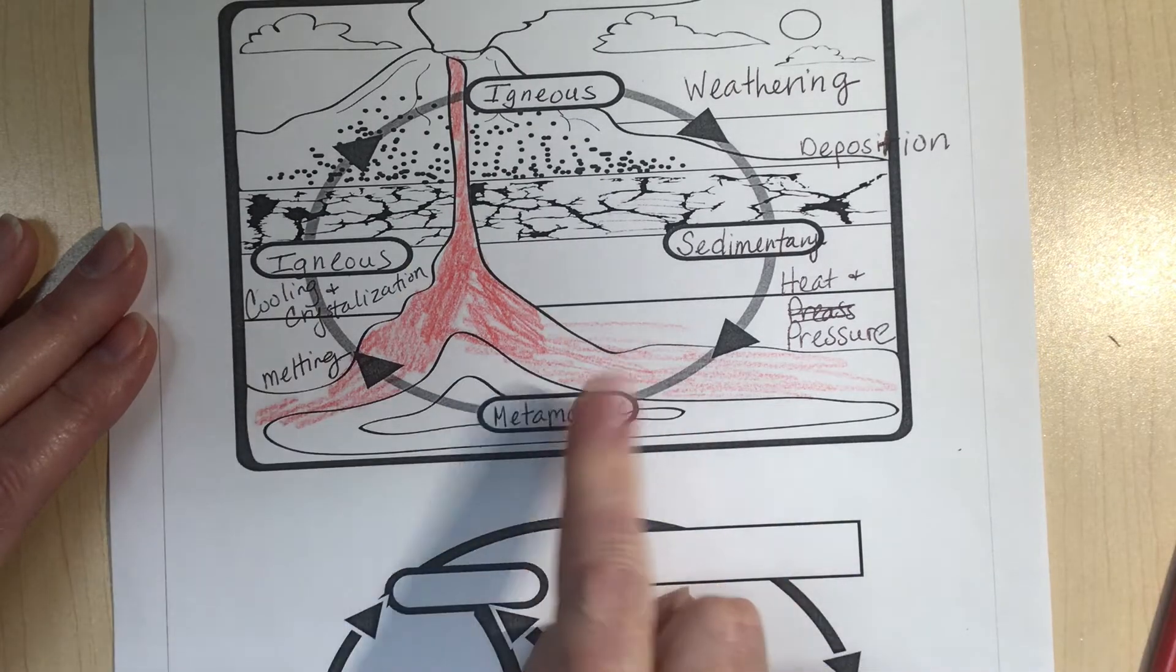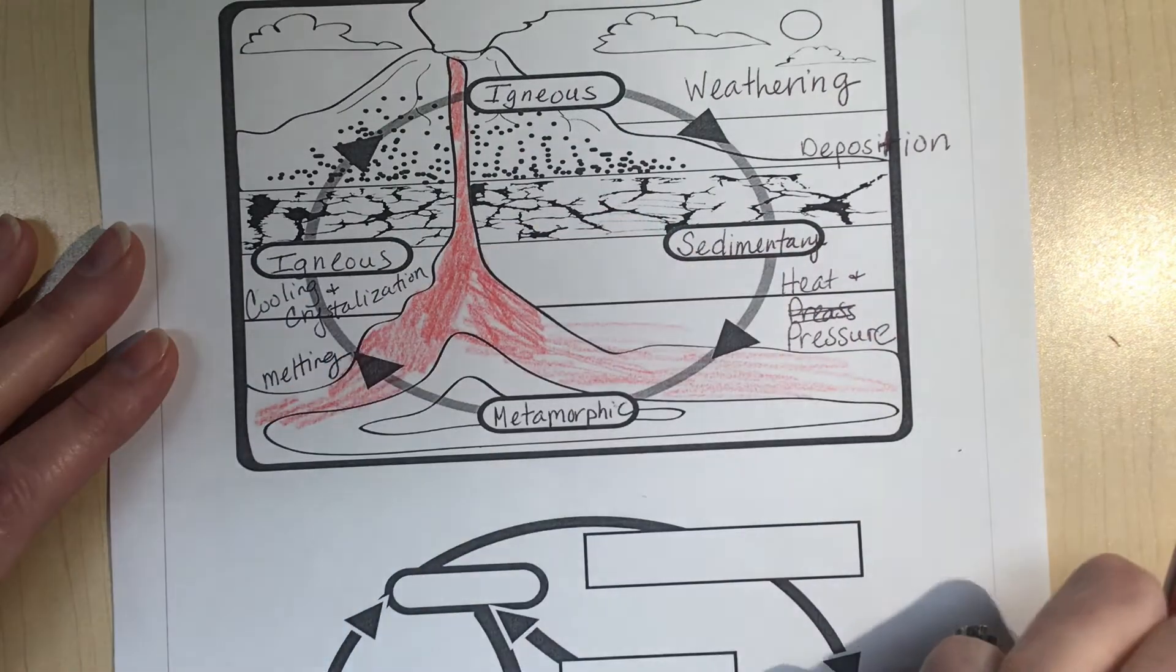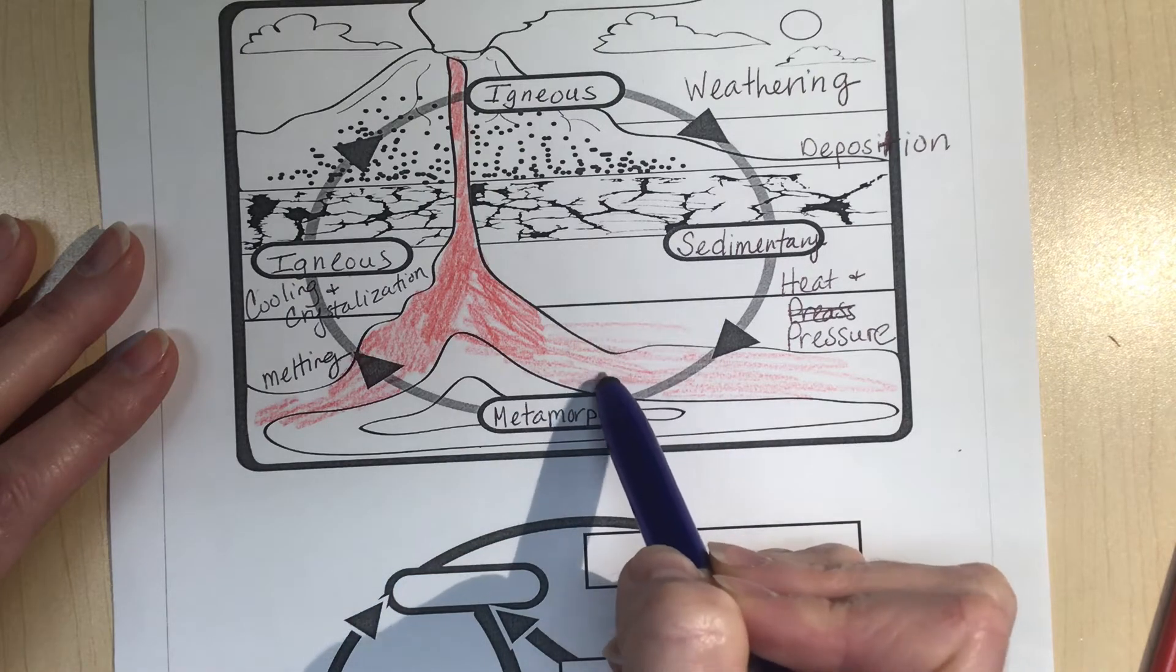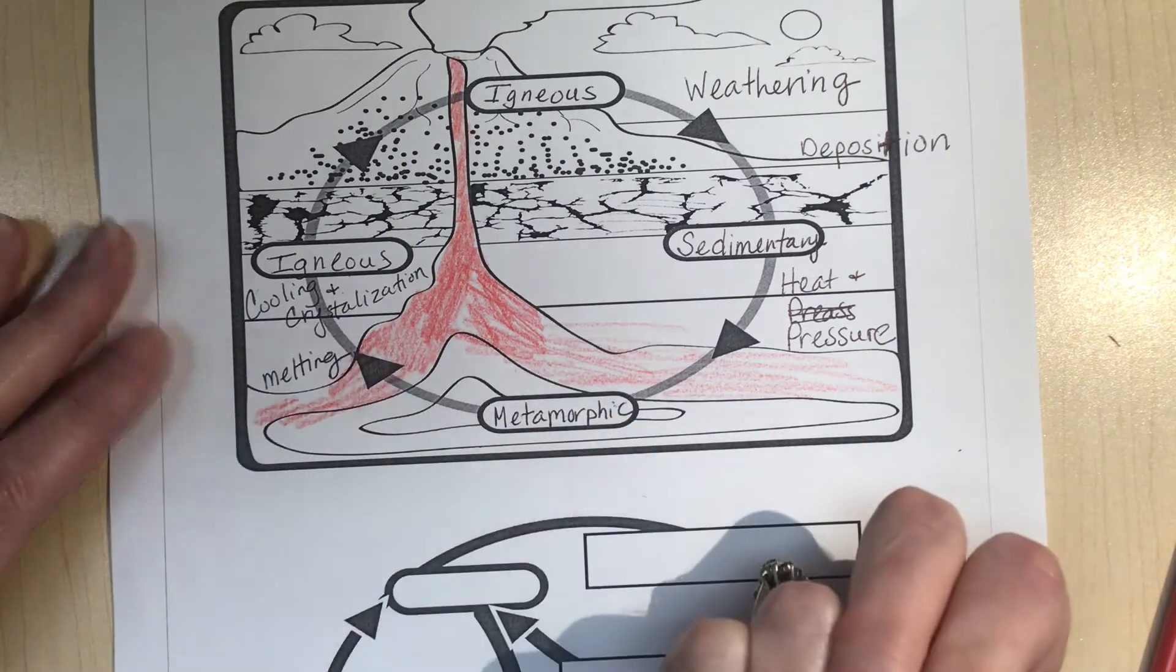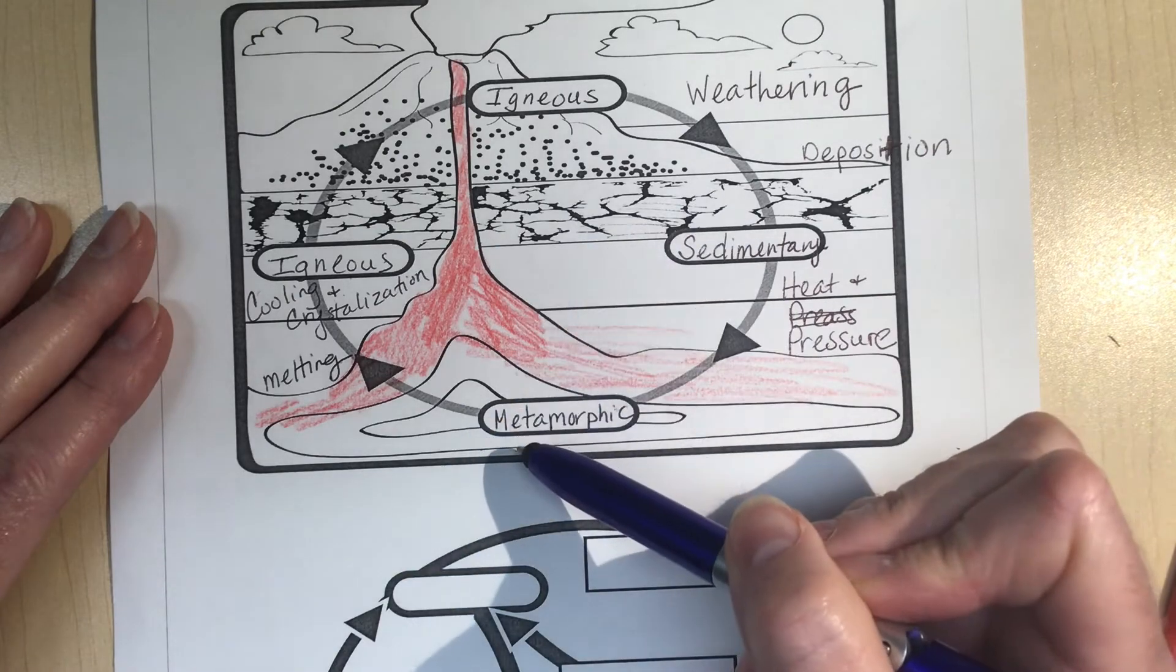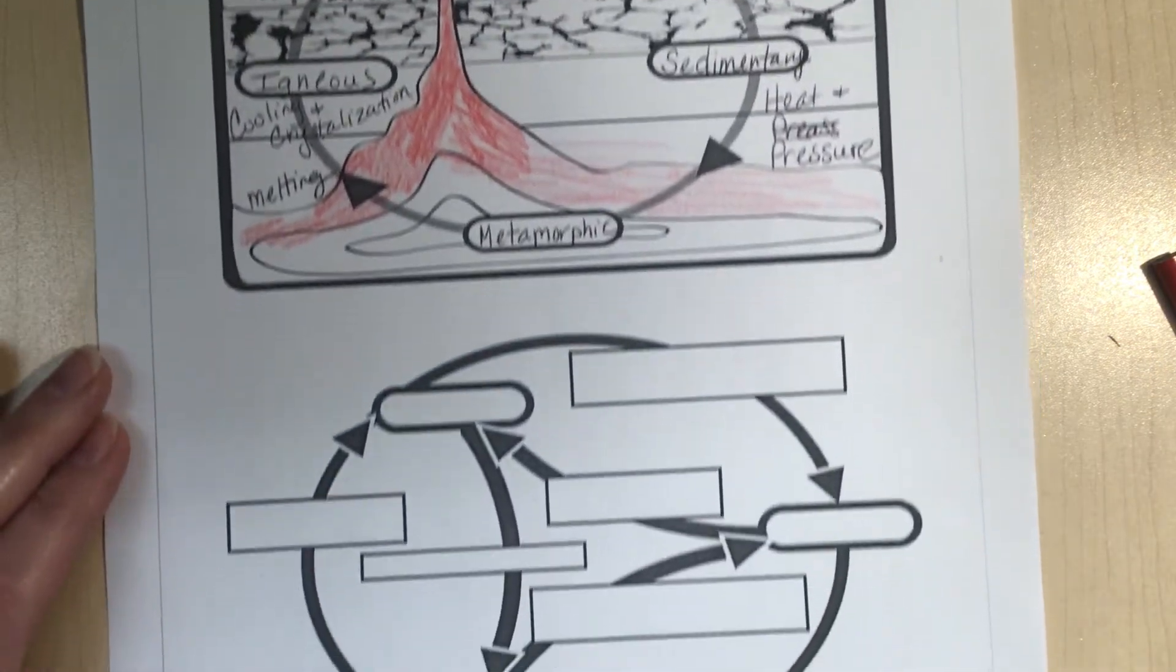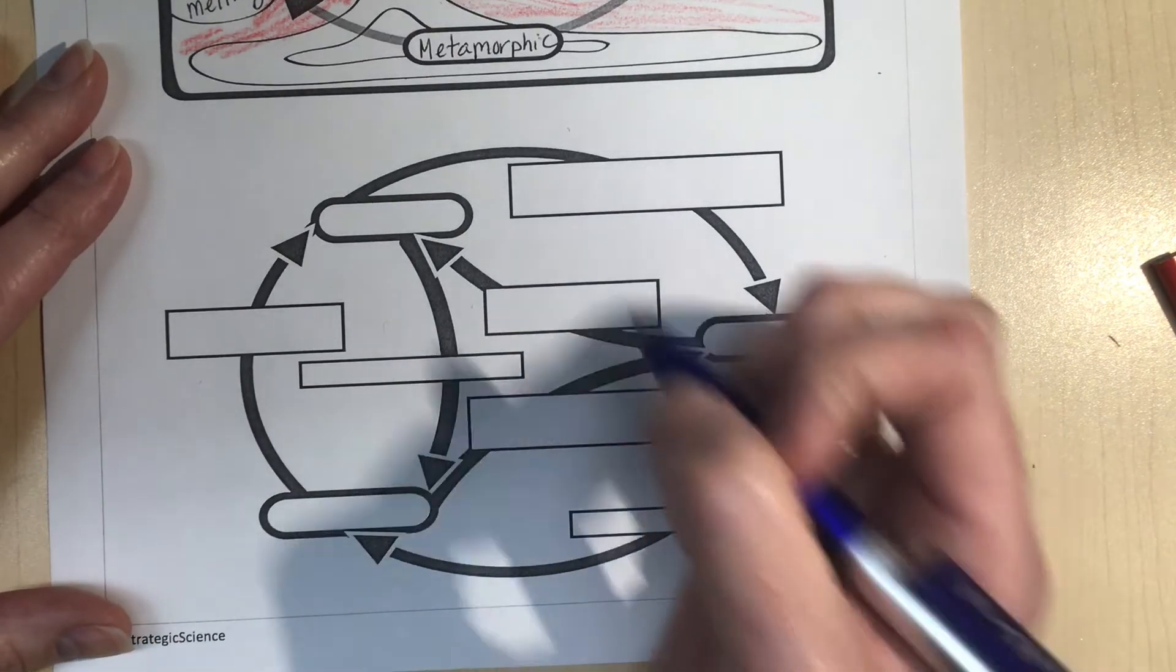But this is not the full way that it can be done, because sedimentary rock can also turn into igneous rock when it's melted. So sedimentary rock also gets close to the magma, it can also melt and become, and then cool and become igneous rock. So we can see a better diagram here. The same thing, also metamorphic rock with weathering and deposition can also turn into sedimentary rock. So this is a better diagram here showing you all of the interactions.